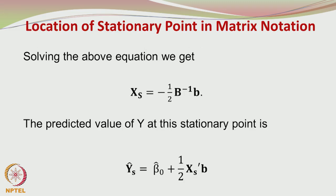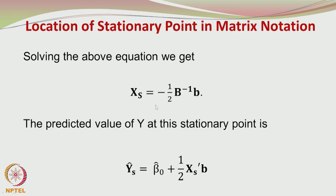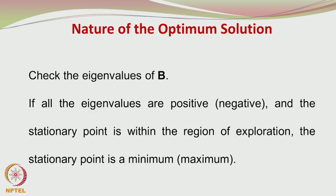When we want to use this matrix method, we solve this particular equation and then we identify the stationary conditions in a very simple way minus half times the B inverse times the small b vector. That will give us the stationary conditions and then using those stationary conditions, we can give the estimated predicted value of Y by using this relationship. Whether the optimum obtained is maxima or minima, you can again use or resort to linear algebra tools, we can check the eigenvalues of the capital B matrix.